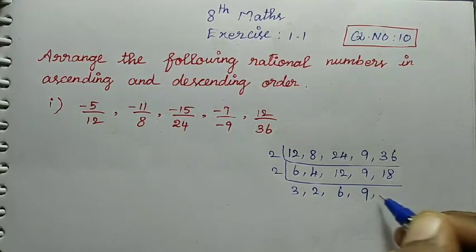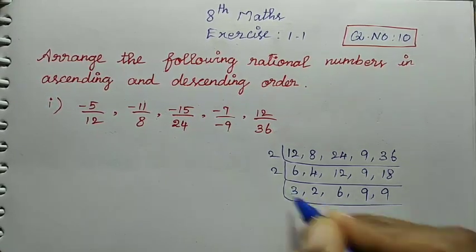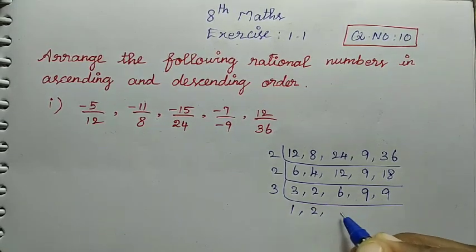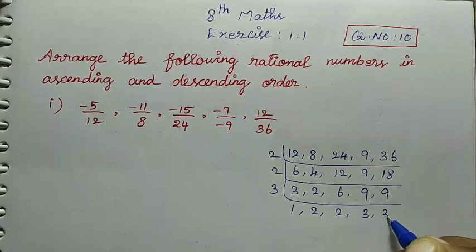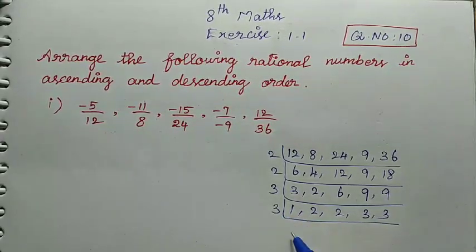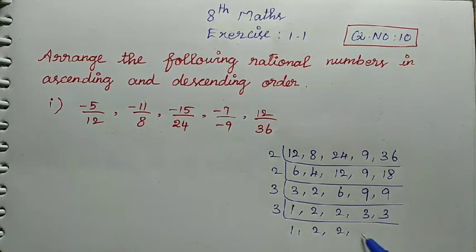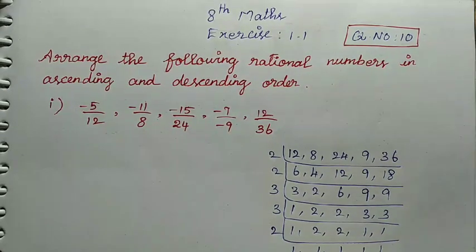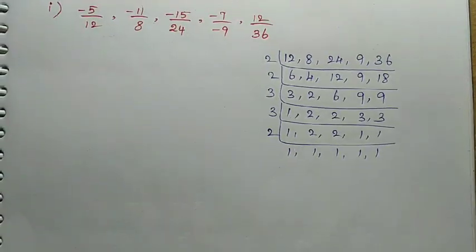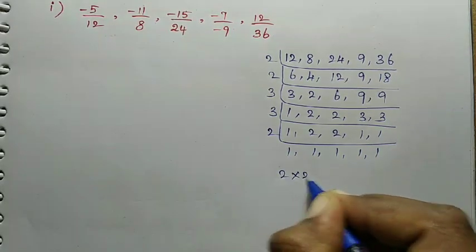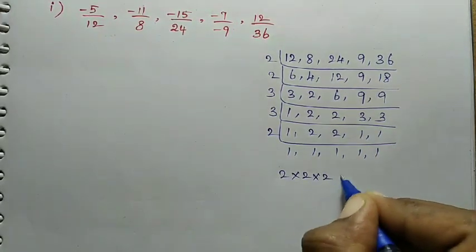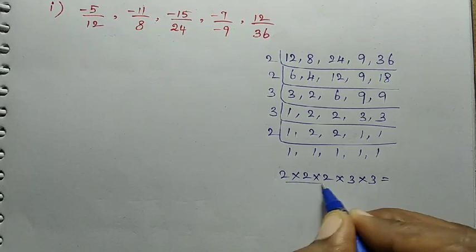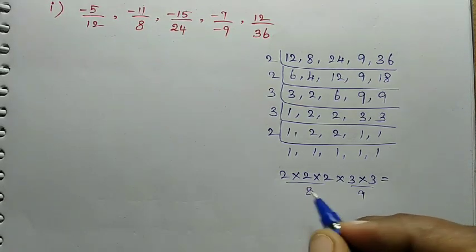Nine divided by 2-times table gives nine times. Using the 3-times table: one time, two divided gives six, two times, nine, three times. Then one, one time. Multiplying the factors together: 2 × 2 × 2 × 3 × 3 = two twos are four, four twos are eight, three threes are nine, nine eights are seventy-two. So the LCM is 72.